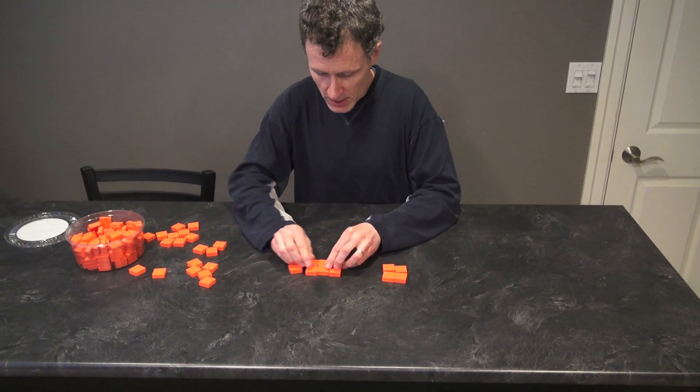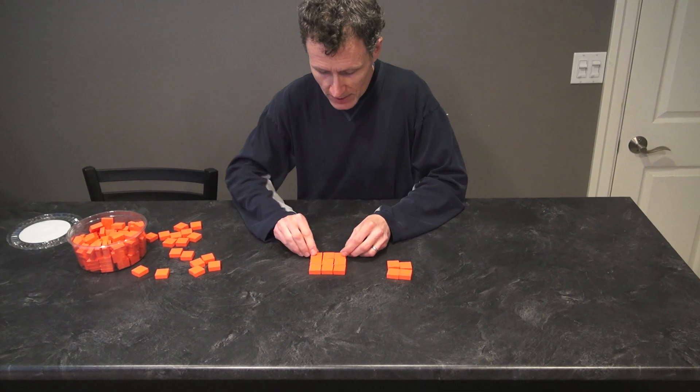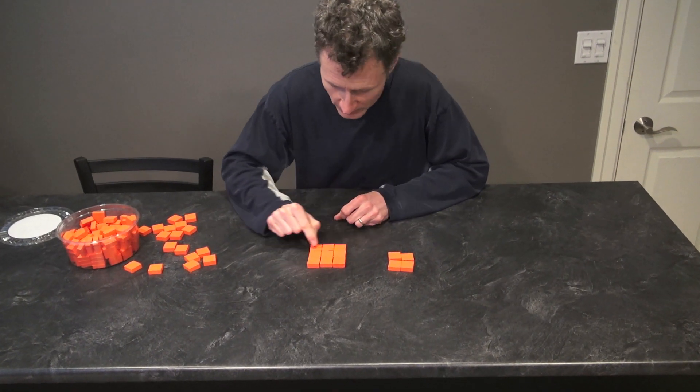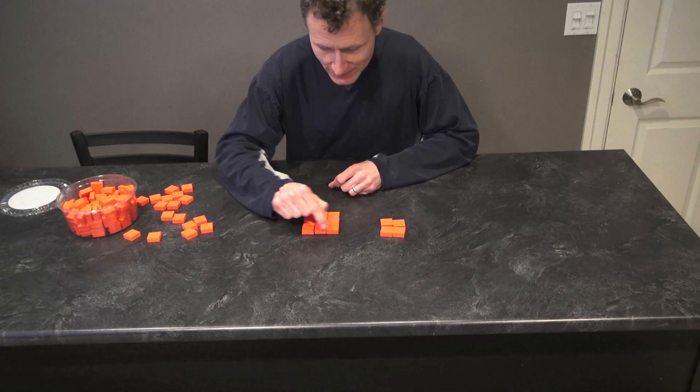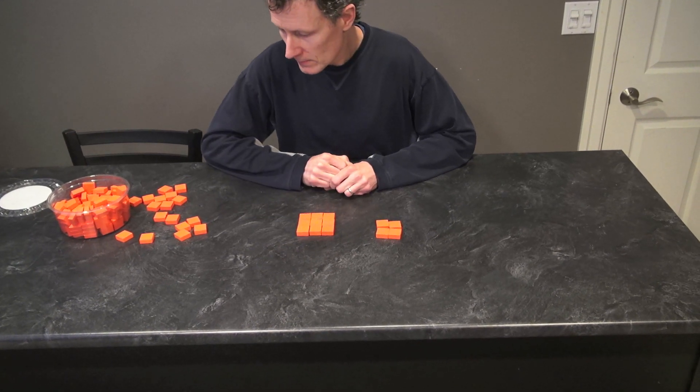And then my nine here, three is the square root of nine, right? Because I got a square that's nine square units. Three is the side length.